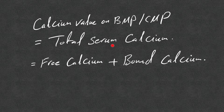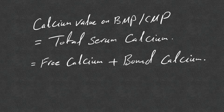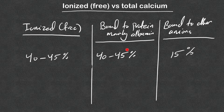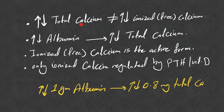Total serum calcium is made of free calcium plus bound calcium. The ionized or free calcium is 40 to 45% of total calcium. Calcium bound to protein — mainly albumin — accounts for about 40 to 45%, and 15% is bound to other anions. Any increase or decrease in total calcium does not by default mean a decrease or increase in ionized free calcium.